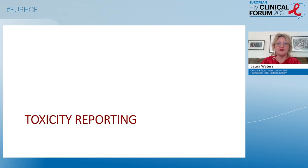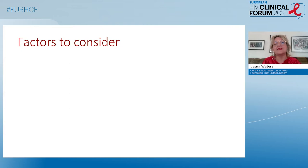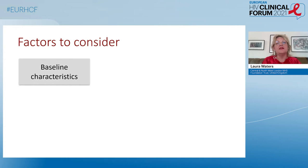Starting with toxicity reporting, there are some really important things to consider when we're looking at studies and the risk of different adverse events. Firstly, baseline characteristics. Baseline characteristics can have a major impact on the risk of toxicity and can really limit our abilities to compare studies.